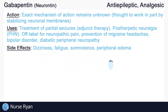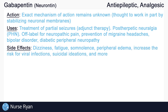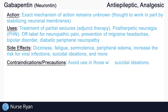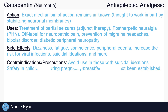Some of gabapentin's side effects include dizziness, fatigue, somnolence, and peripheral edema. It may increase the risk for viral infections and suicidal ideations, which is why we would avoid use of gabapentin in those with suicidal ideations. Safety in children or during pregnancy and breastfeeding has also not yet been established.